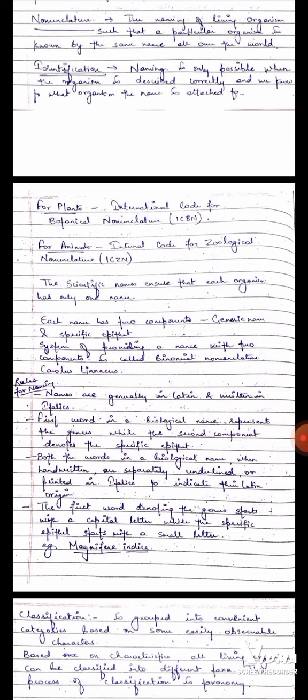Then for plants international code for botanical nomenclature ICBN is responsible for the nomenclature for plants. And for animals international code for zoological nomenclature ICZN this organization is responsible for the nomenclature of animals.